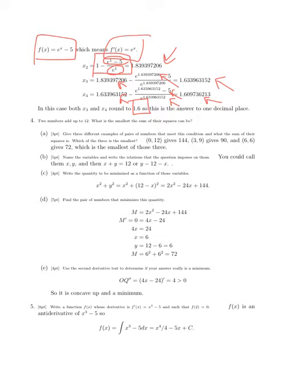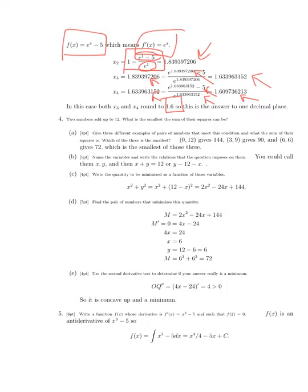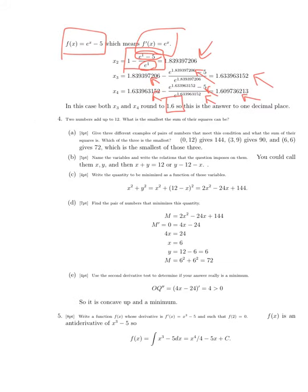For the next question, we want two numbers that add up to 12. We want to find the smallest the sum of their squares can be. The variables are the two numbers. We are asking that they add up to 12. The thing we want to minimize is the sum of their squares. So 0 and 12 would give 144. 3 and 9 would give 81 plus 9 which is 90. The smallest I tried was 6 and 6, which gives 36 plus 36 is 72.